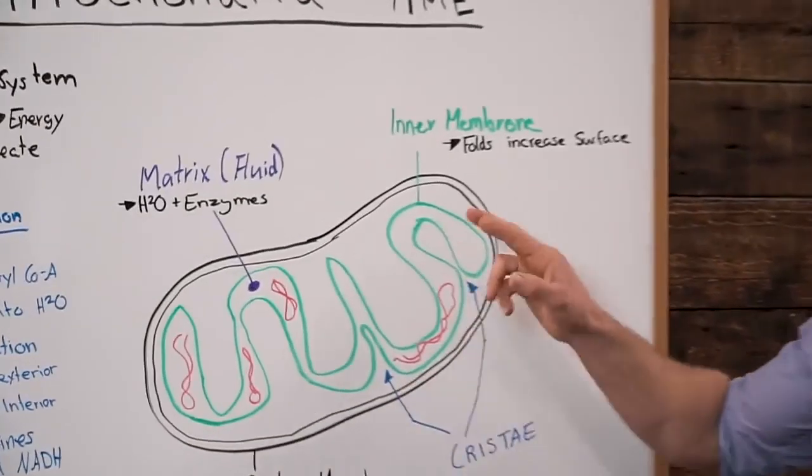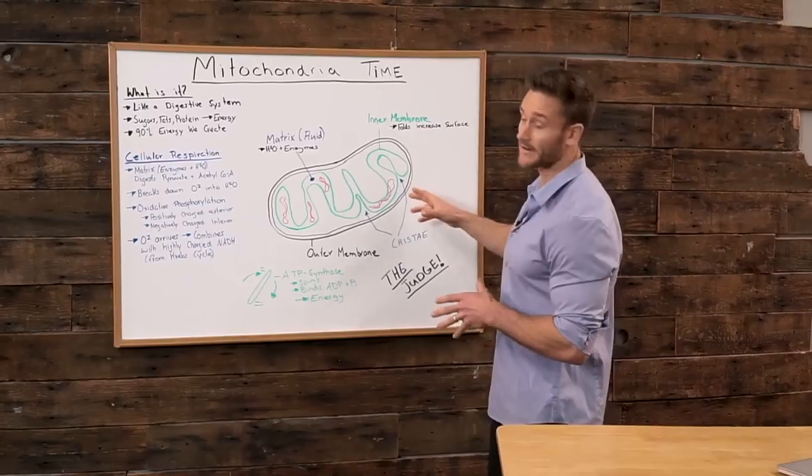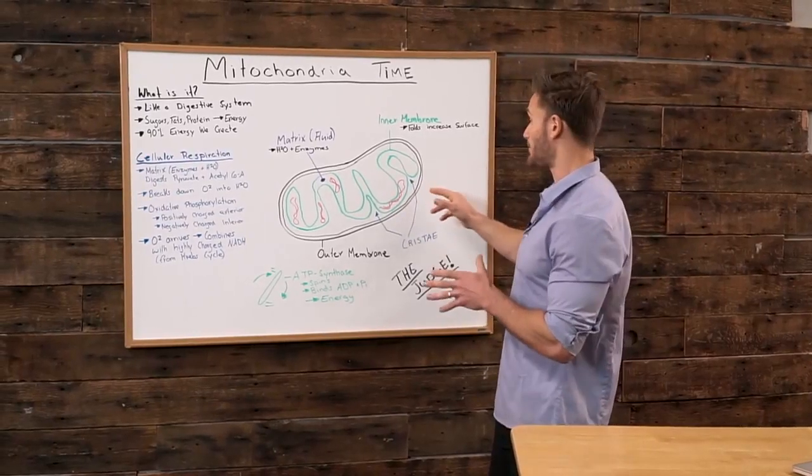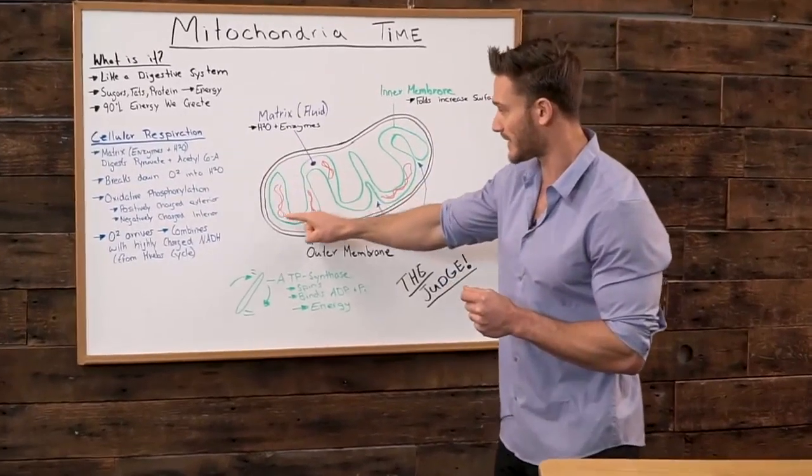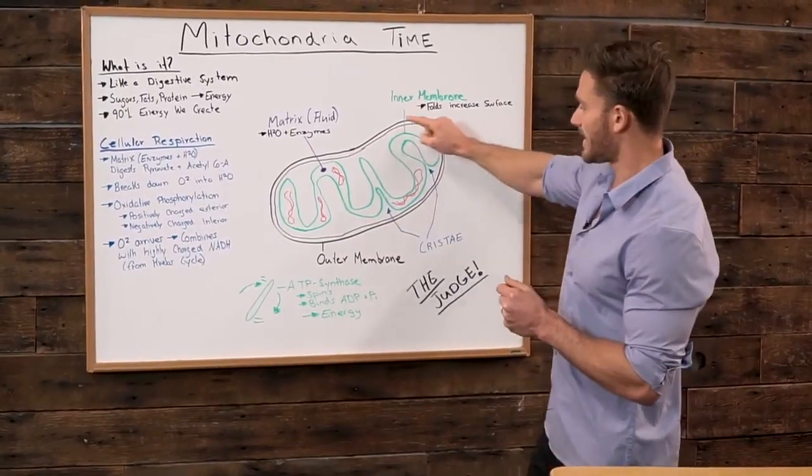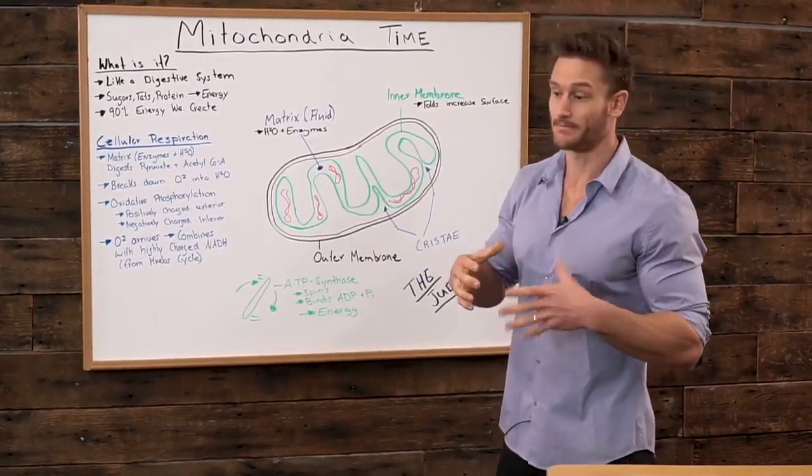First and foremost, let's take a look at the actual diagram of the mitochondria. The mitochondria inside of a cell has two different membranes. It has this outer membrane right here, and that outer membrane really just serves as basically the shell.